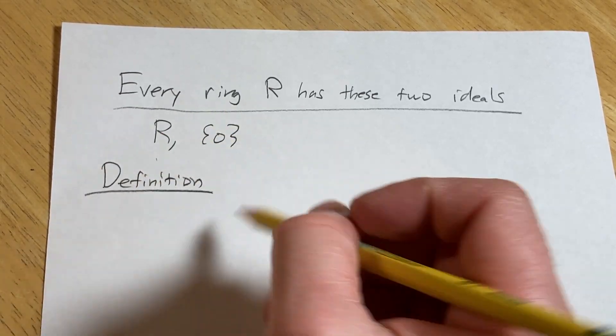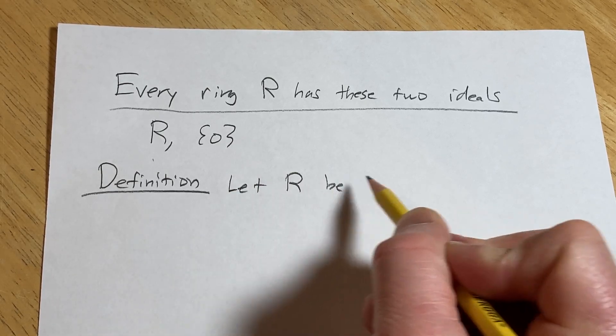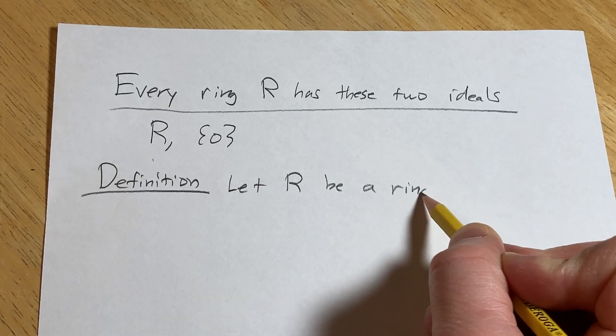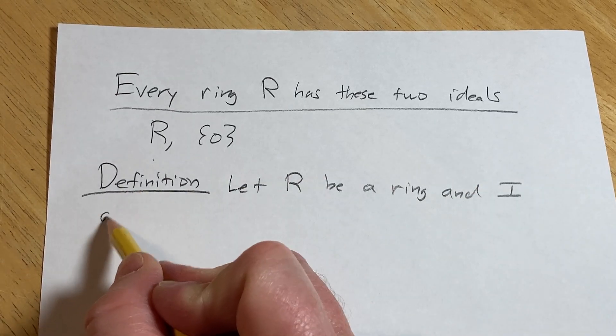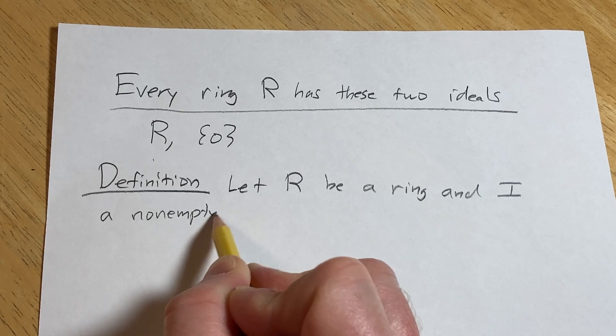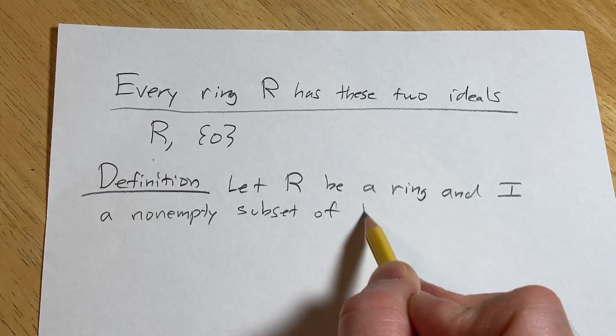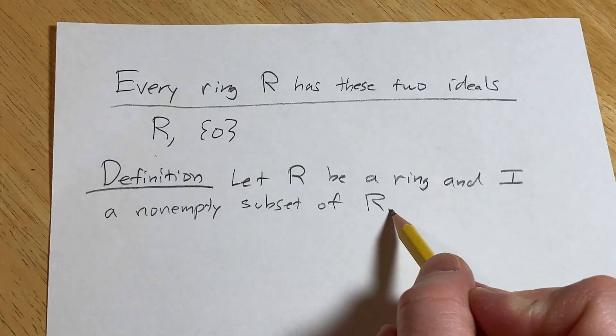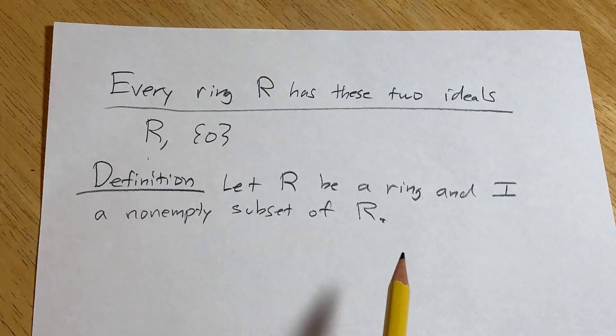So let R be a ring and I a non-empty subset of R.